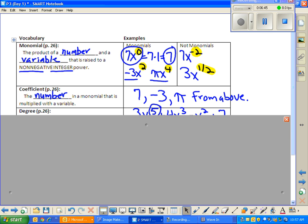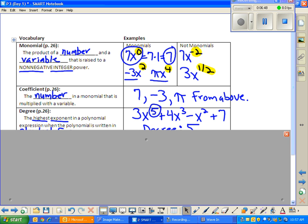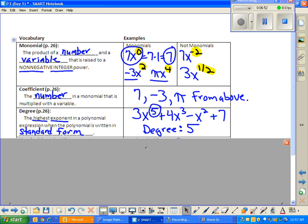No. So the degree. My smart board's not really cooperating with me today. The degree of a polynomial, just so you know, is the highest exponent. Degree is super important to be able to identify because it tells us a lot about the shape of a polynomial when you graph it. It's the highest exponent in a polynomial expression when the polynomial is written in standard form. So you'll see I just picked a polynomial there. 3x to the fifth plus 4x cubed minus x squared plus 7. I circled the 5 because that's the biggest exponent. So the largest exponent. So the degree of this particular polynomial is 5. Highest exponent.